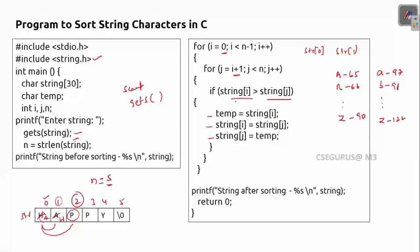After a is placed, we check a with p — a is not greater, so no swap. Then a with p again, a with y — no swaps. When i equals one, h is compared with the remaining characters. The loop runs i up to n minus 2 and j up to n minus 1, because if i reached n, j would be n plus 1, going out of bounds and hitting the null character, which we must avoid.